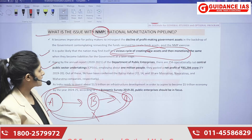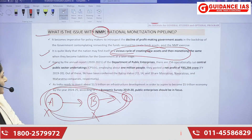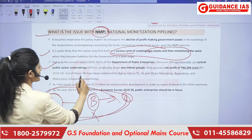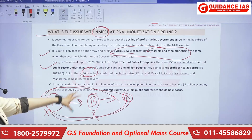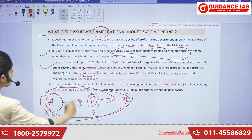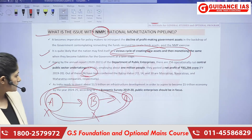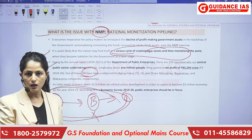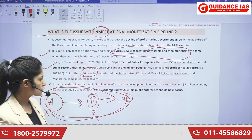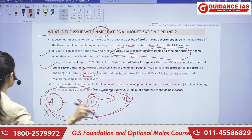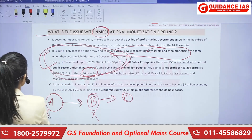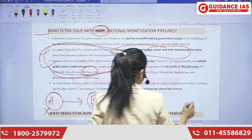Going by the annual reports of the Department of Public Enterprise, there are 256 operational central public sector undertakings with a million people employed and a net profit of 93,294 crores. Out of these, 96 have been conferred Ratna status — 72, 14, and 10 are Mini Ratna, Navratna, and Maharatna respectively. As India needs to invest 1.5 trillion on infrastructure development to achieve the dream of becoming a 5 trillion economy by 2025, the public sector should be in focus and all these problems should be rectified.